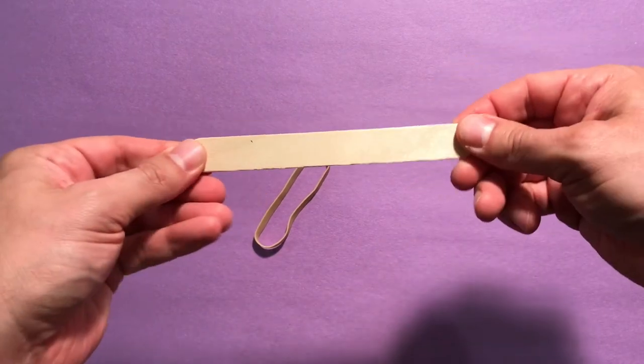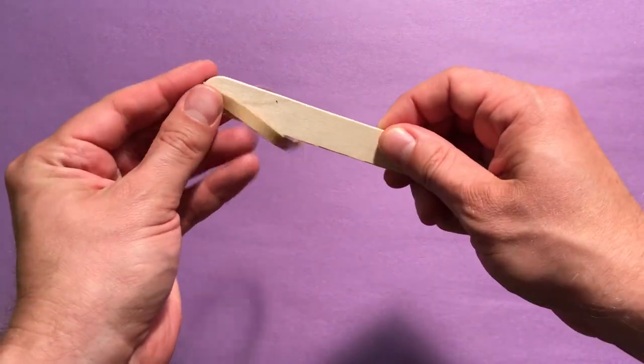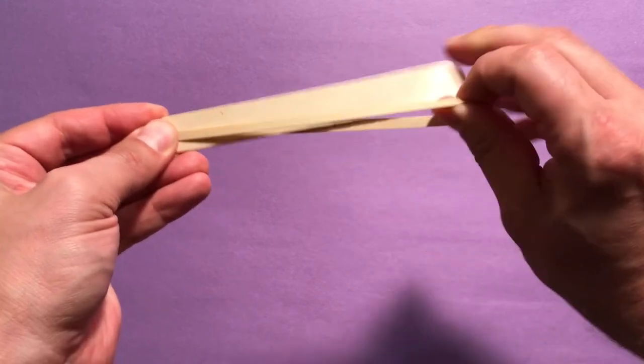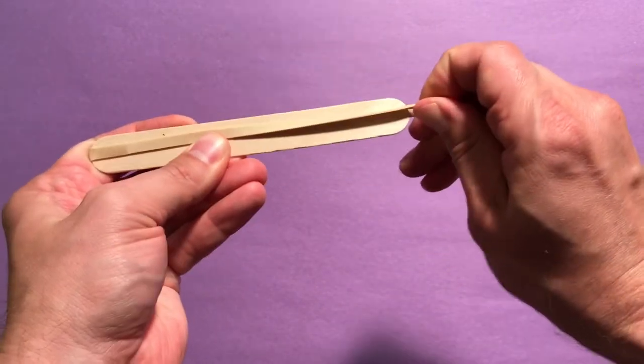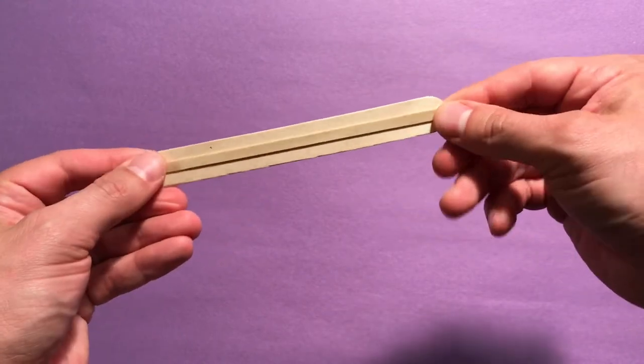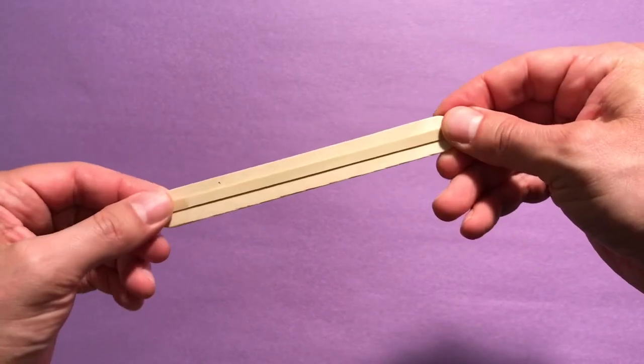First, you'll stretch the wide rubber band lengthwise over one of the craft sticks. So you line it up on one edge, pull it over to the other, and then make sure it lays flat. You might have to make an adjustment or two, but if you turn it, you should see it flat on both sides.